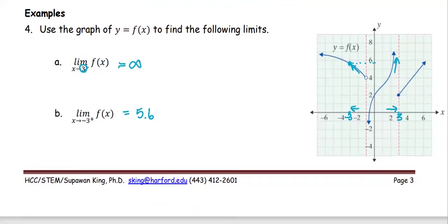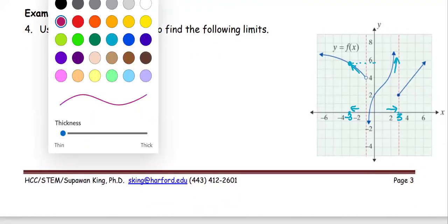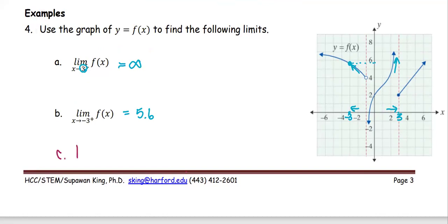But if I add another problem, in part C, let's see if you look for the limit of the function as x approaches negative 1 from positive side. Where is negative 1? Negative 1 is right here. And from the right side, the graph approaching all the way down, which is negative infinity. So the answer for this is negative infinity.